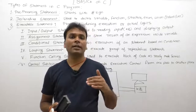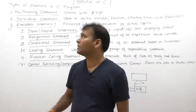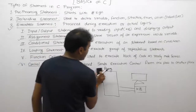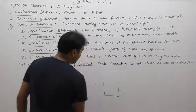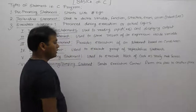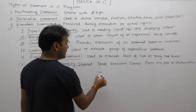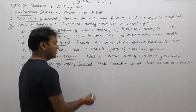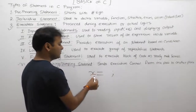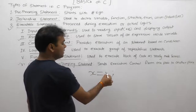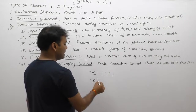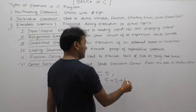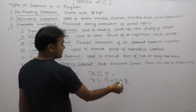For assignment statements: if the result of an expression needs to be stored, we use the assignment operator. If a statement involves an assignment operator (=), it is considered an assignment statement. The left side must be a variable, and the right side may be a value like 5 or 10, or an expression like 5 + 2 + y.